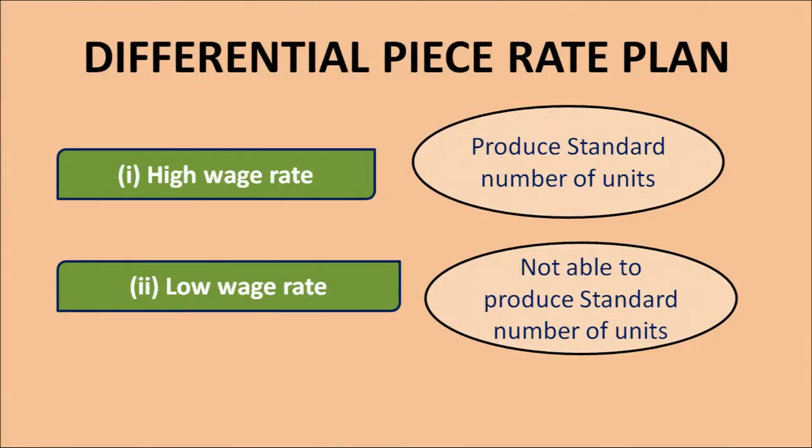For example, if the standard number of units to be manufactured within one hour is 20 — a worker producing 20 or more units should be paid at a higher wage rate because he is manufacturing at or above the standard. A worker producing less than 20 units should be paid at a lower wage rate. As a result, workers would always be motivated and it will help in boosting their morale to produce more in order to earn more. That was the whole idea about the differential piece rate mechanism.